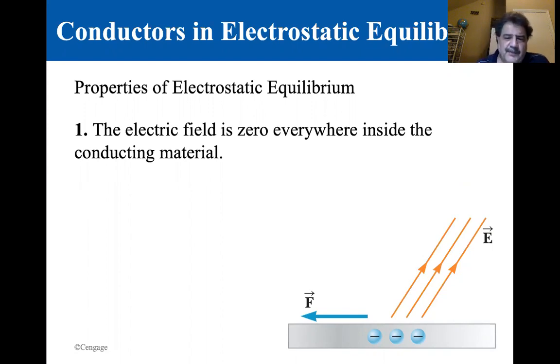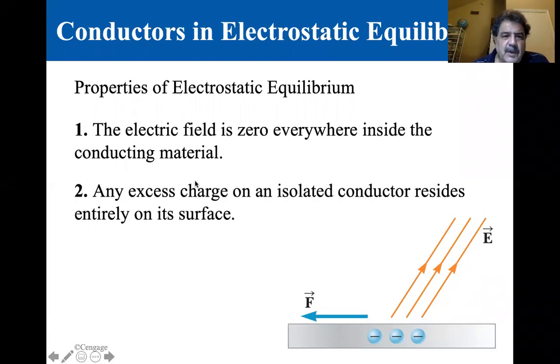Number two: any excess charge on an isolated conductor resides entirely on its surface. Property two is a result of the one over r squared repulsion between the like charges described by Coulomb's law.